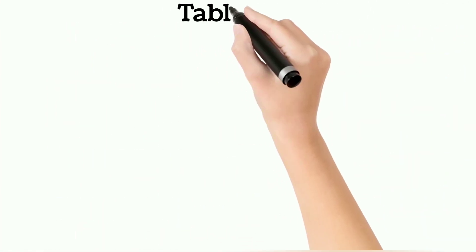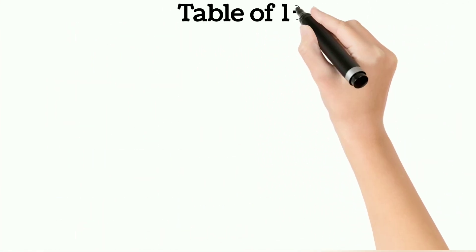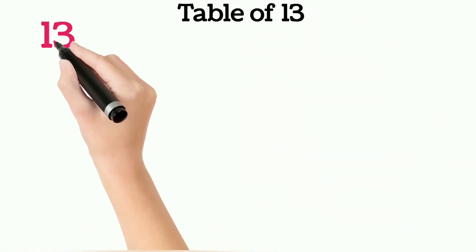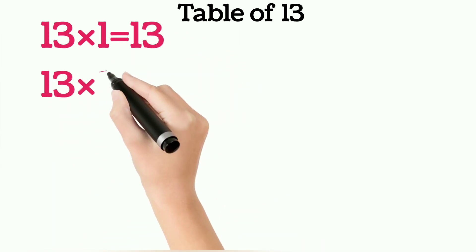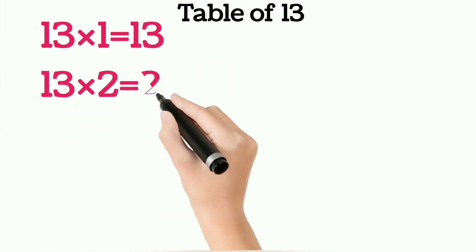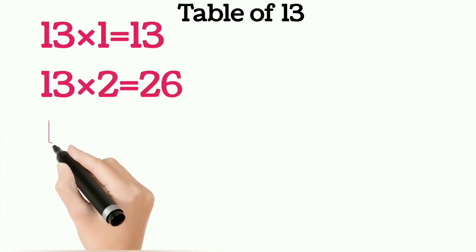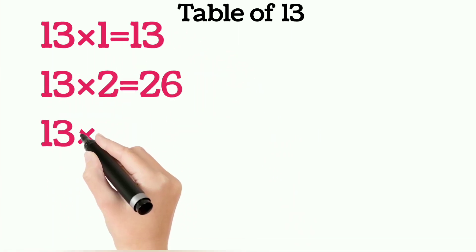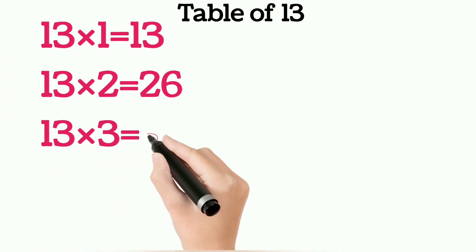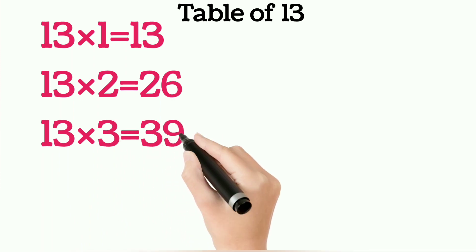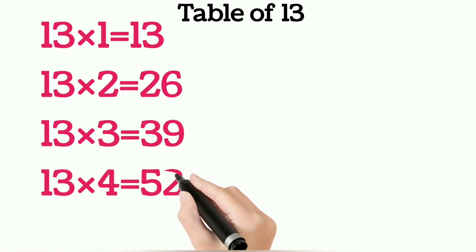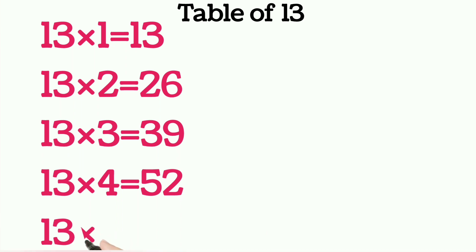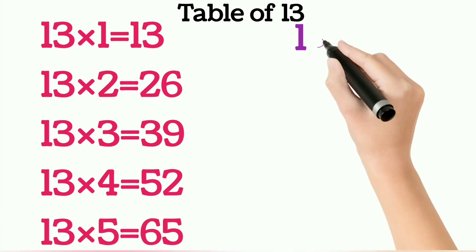Table of Thirteen. Thirteen ones are thirteen, thirteen twos are twenty-six, thirteen threes are thirty-nine, thirteen fours are fifty-two, thirteen fives are sixty-five.